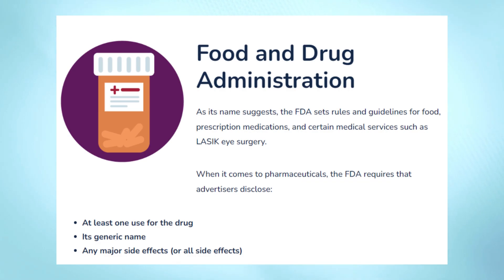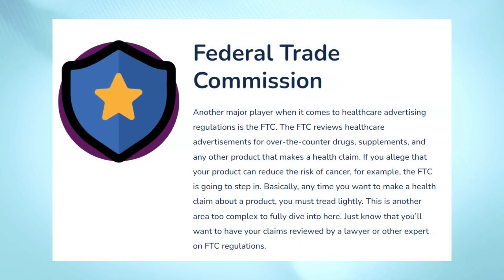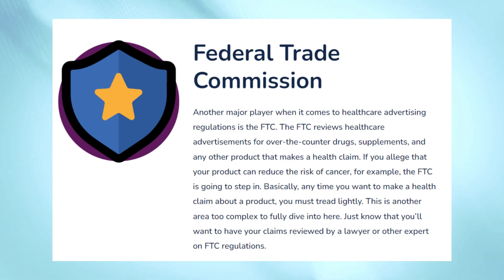FDA medication ad rules include: you must include whether there is a generic version of the drug, how quickly the drug can work, if there is a similar drug available, how prevalent the condition is, etc. And the FTC will step in if you make claims about a medication — such as 'this medication reduces your risk of cancer' — so you will want to have your claims reviewed by a lawyer or other expert on FTC regulations.